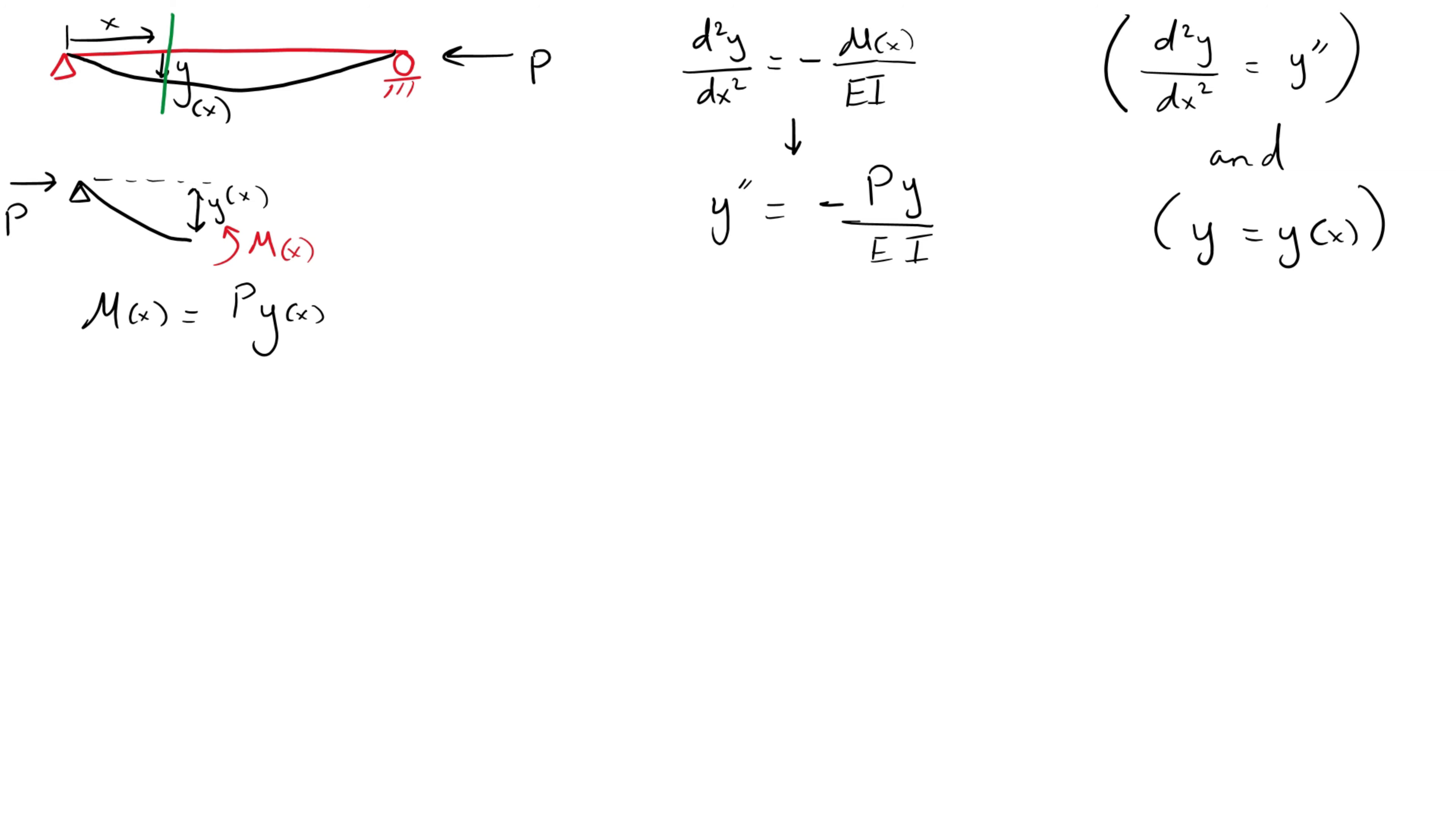To make things easier and neater, we will call the second derivative of y with respect to x as y double primed and y of x as just y. But always remember that y is a function of x. By substituting the bending moment in terms of the axial load P determined from the equilibrium equations, we get the following. This can be arranged as follows.